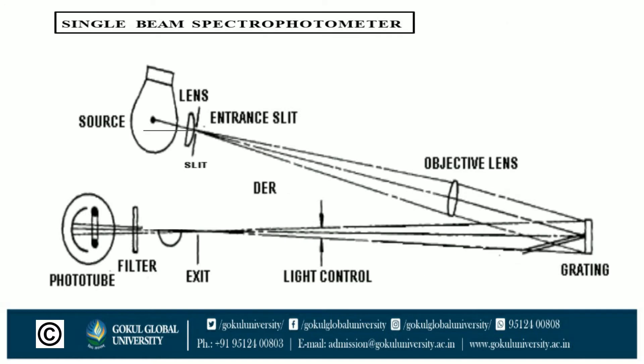In the single beam spectrophotometer diagram, light from the source passes through the entrance slit, then through the objective lens and ripple lens with the grating, then goes to the exit slit and filter, and gives data to the photo tube.